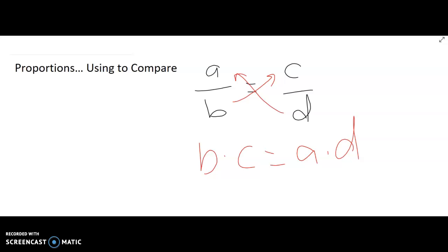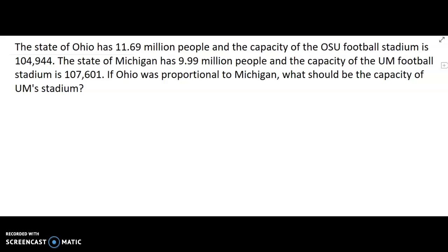As long as we know three out of the four positions, we can solve for the missing piece. So let's use this to compare. The state of Ohio has 11.69 million people, and the capacity of the OSU football stadium is roughly 104,944. The state of Michigan has 9.99 million people, and the capacity of the UM football stadium is roughly 107,601. But if Ohio was proportional to Michigan in population to football stadium capacity, what should the capacity of UM's stadium be?